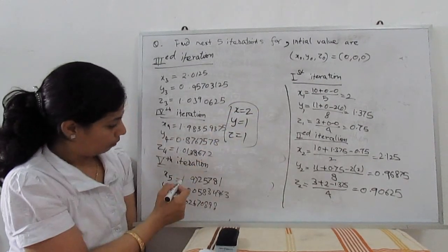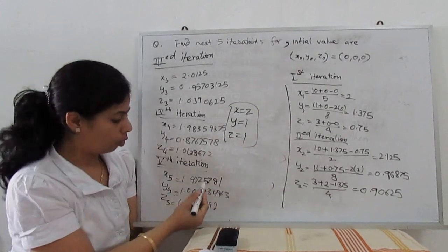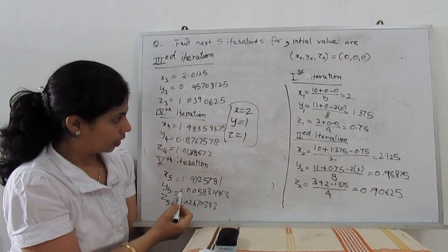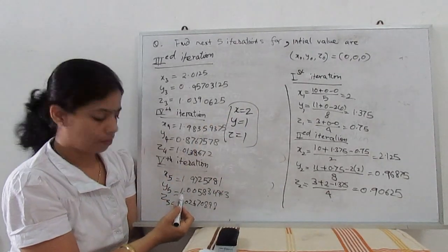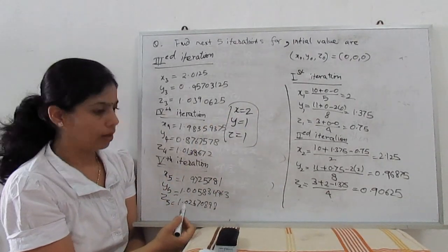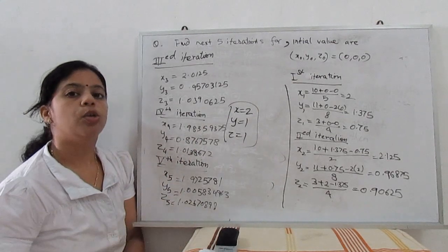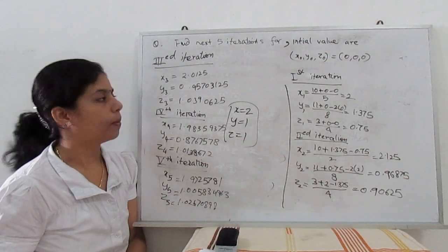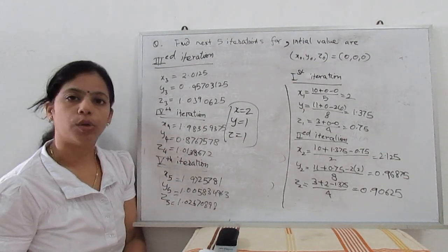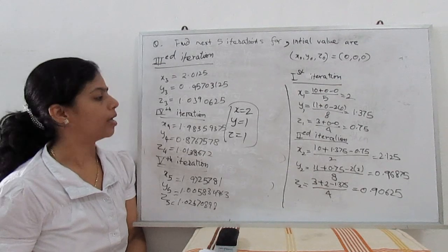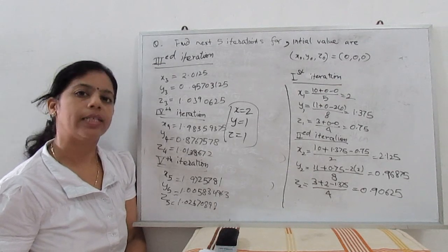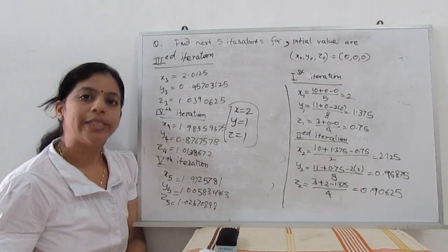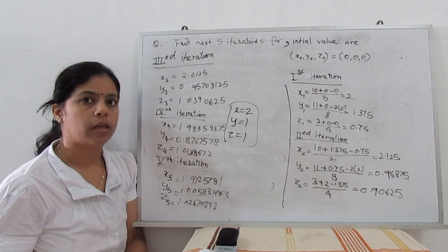For example, 1.97 rounded up gives 2, and other values round to 1. So the solution of the system of linear equations is x = 2, y = 1, and z = 1. That is the Jacobi method.